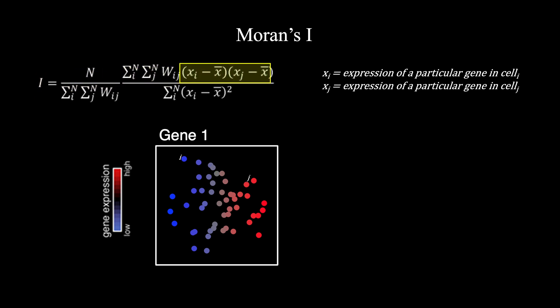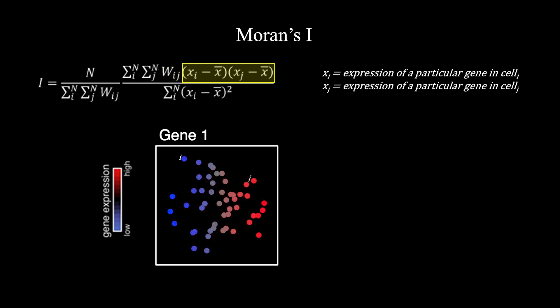Now let's consider two other cells, I and J. The gene expression magnitude for cell I is lower than average, as shown in blue, resulting in a negative value for (X_I minus X-bar), but for cell J it is higher than average, as shown in red, resulting in a positive value for (X_J minus X-bar). A negative number multiplied by a positive number is negative, but keep in mind W_IJ — in this case W_IJ is 0 because these two cells are not adjacent to each other, so they actually do not contribute anything to the Moran's I statistic for this gene.